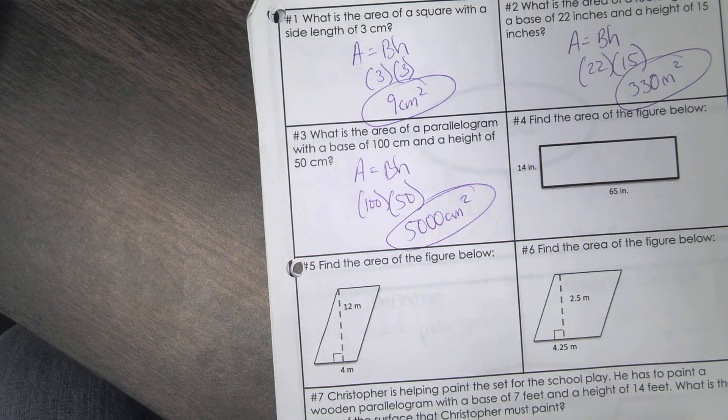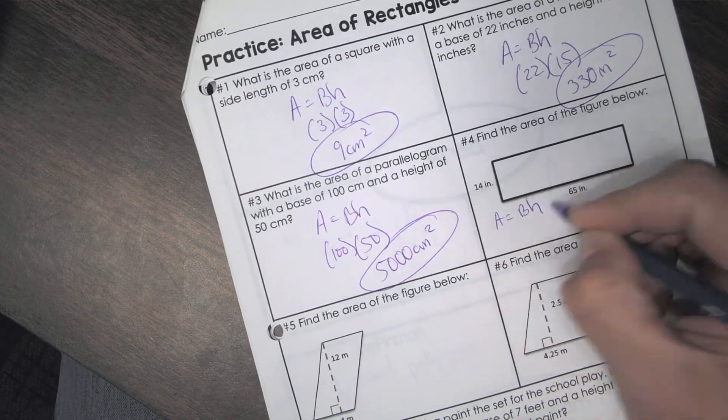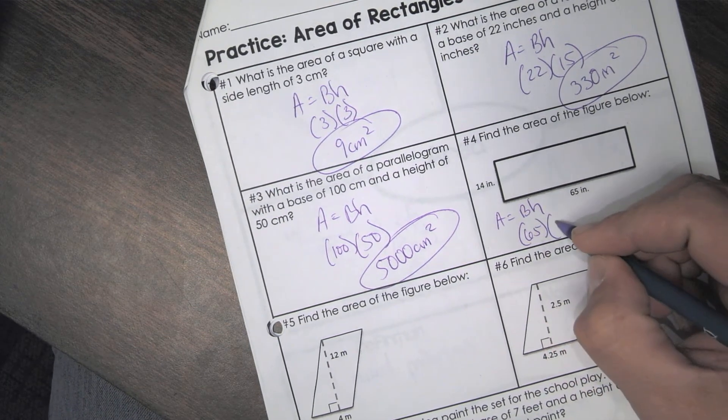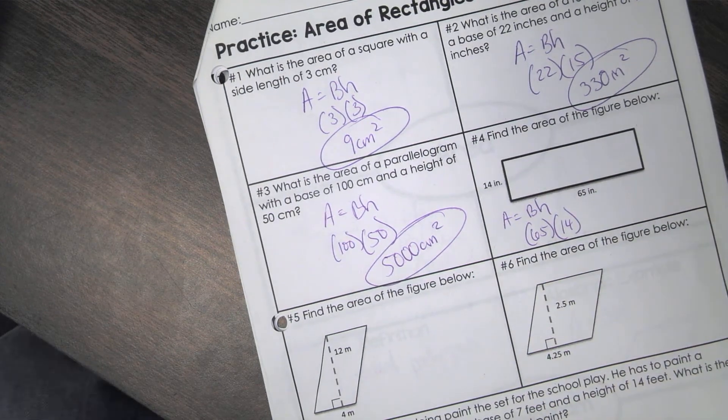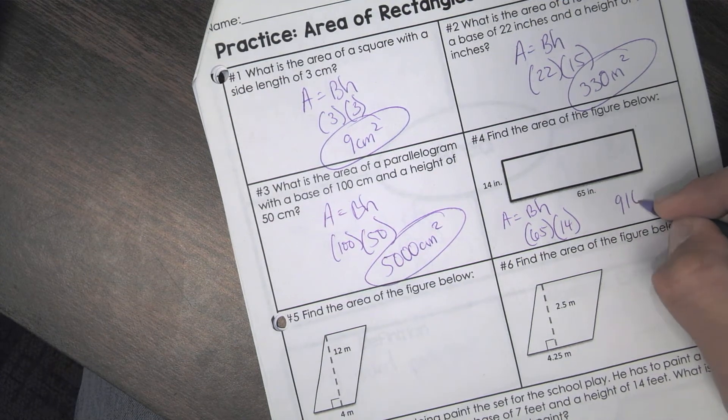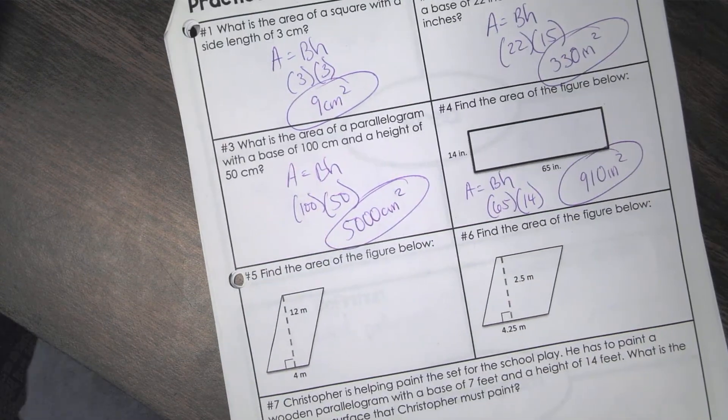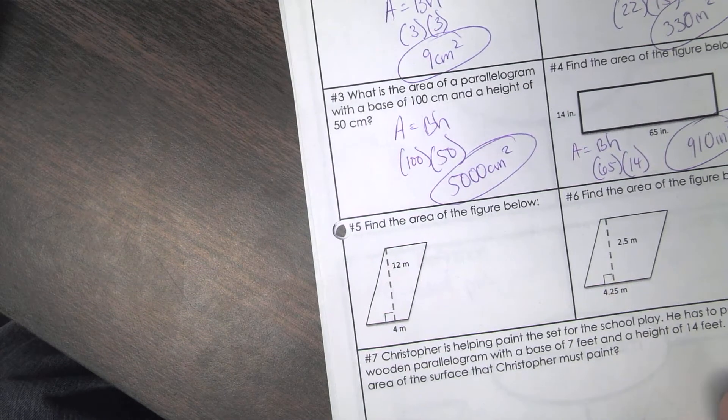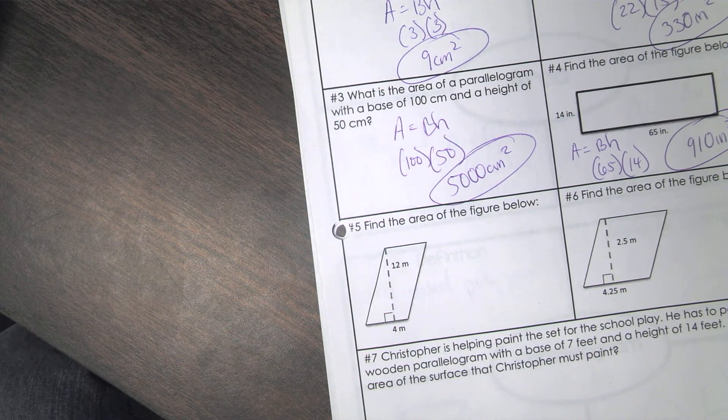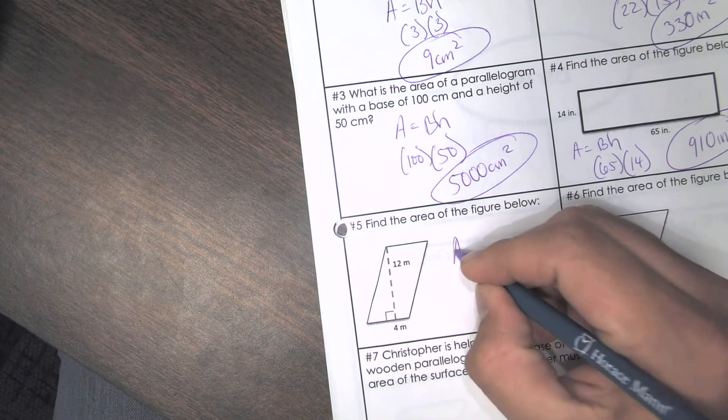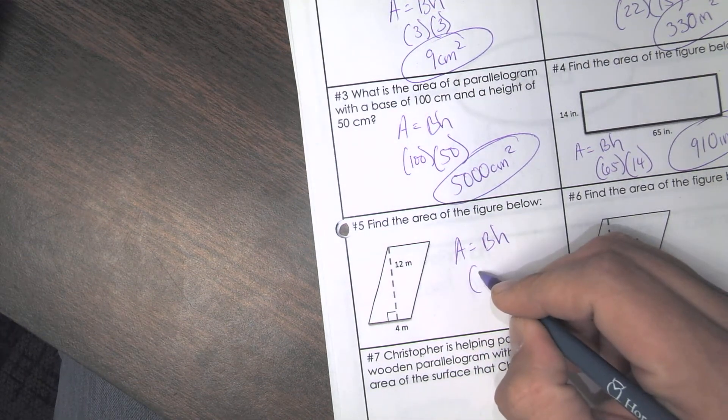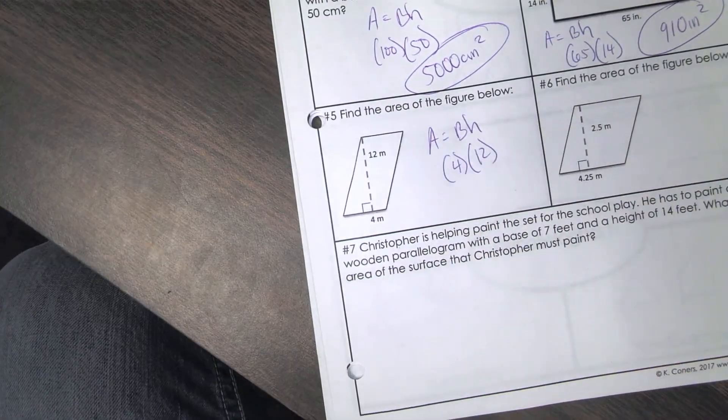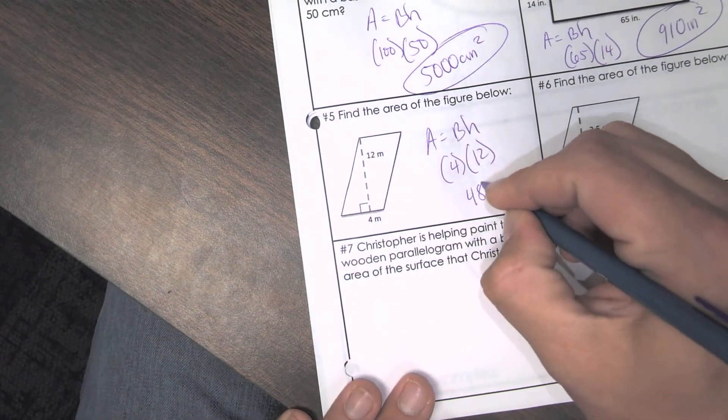So all you're doing with these guys is multiplication. Find the area of the figure below. So we do base times height again. Our base this time is what? 65. A height is 14. So when you multiply this out, you get what, Austin? 910 inches squared. And number five. Find the area of the figure below. So this is a parallelogram now. So once again, A equals base times height. What's our base? 4. What's our height? 12. And what's the area then? 48. 48 meters squared.